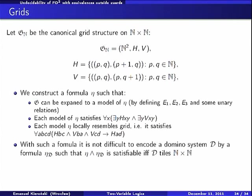And how we will do it? What we really need? We need a formula, a formula eta, such that the standard grid, that should be g_n here, can be expanded to a model of eta.